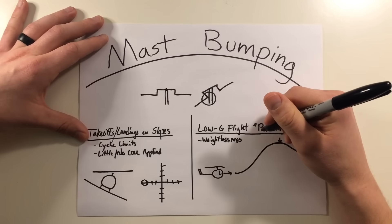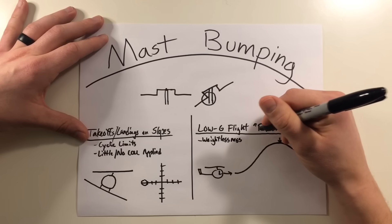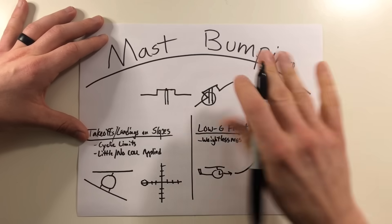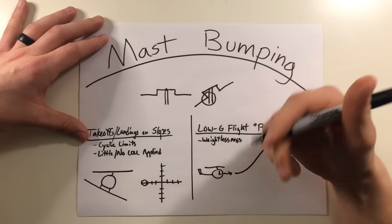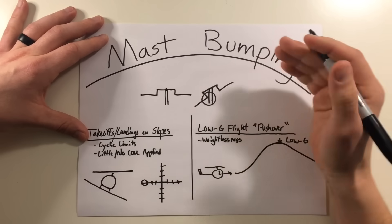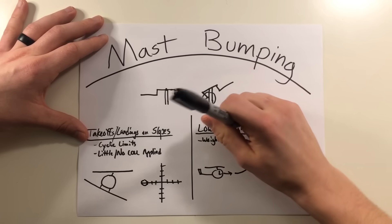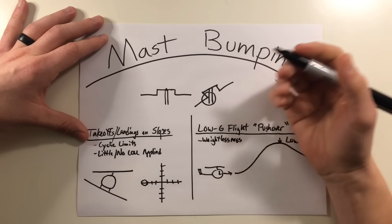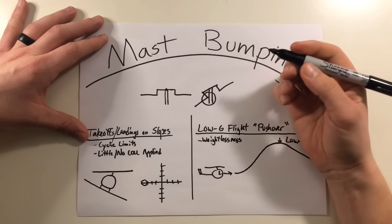Now the tail rotor still provides that thrust to offset the main rotor, but now there's nothing for it to counteract so the aircraft begins to side slip and roll towards the right. Now the pilot sees this right roll and tries to correct with a little bit of left cyclic, but this has little or no effect because the main rotor is unloaded. So what does the pilot do?